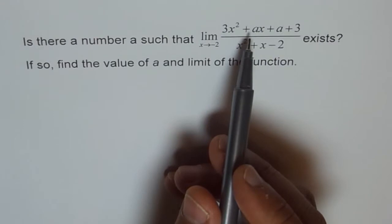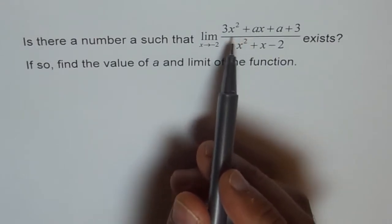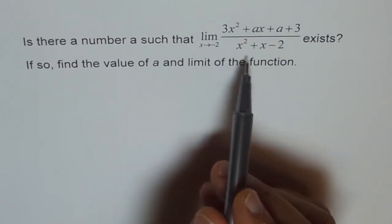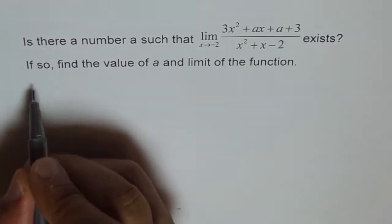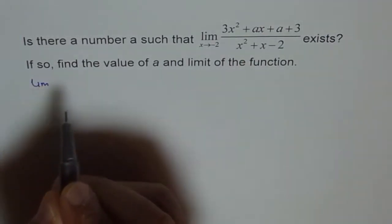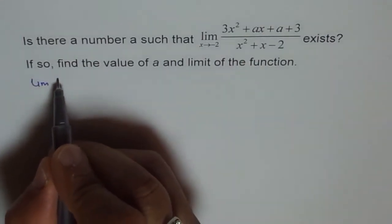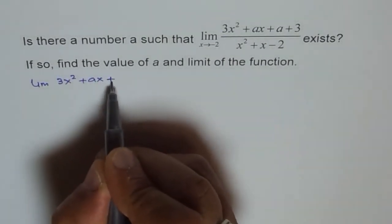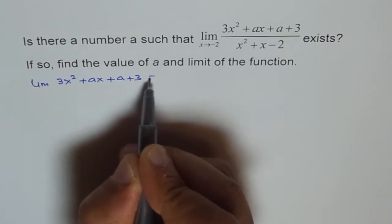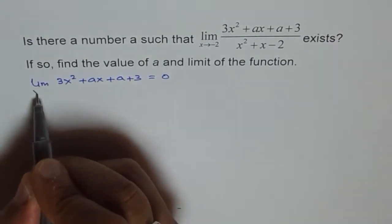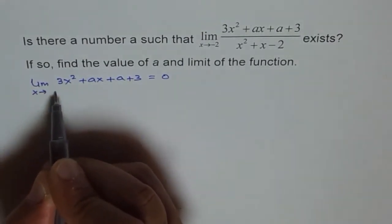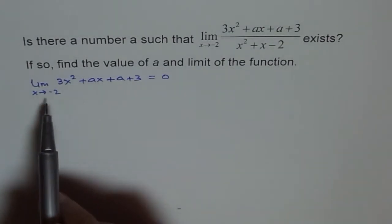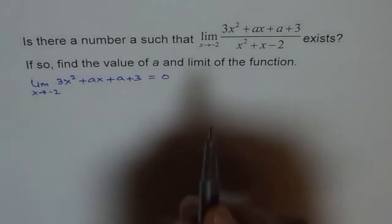We realize that for x equals minus 2, we should get 0 in the numerator — that is the only condition when this rational function can have a limit. So the limit of (3x² + ax + a + 3) should equal 0 for x approaching minus 2, and this condition gives us the value for a.